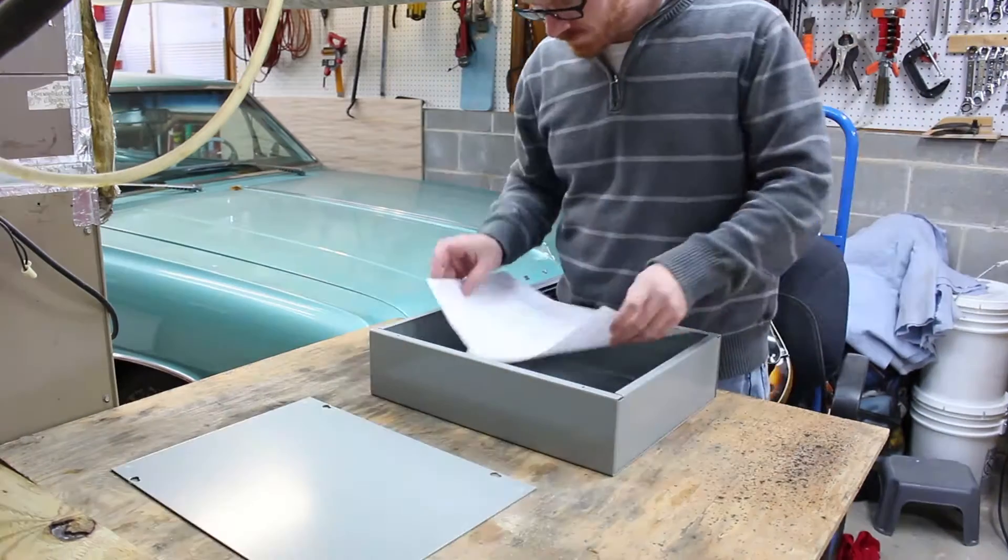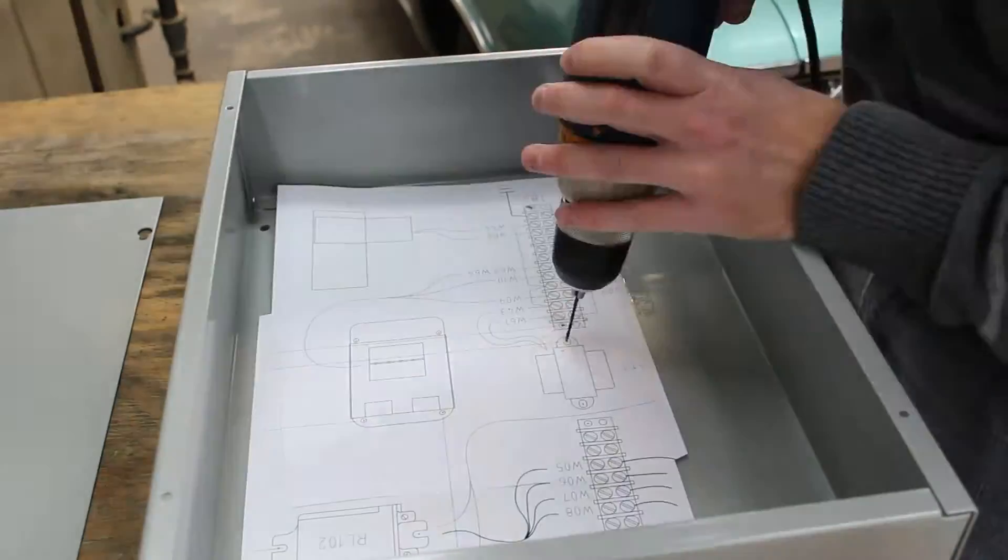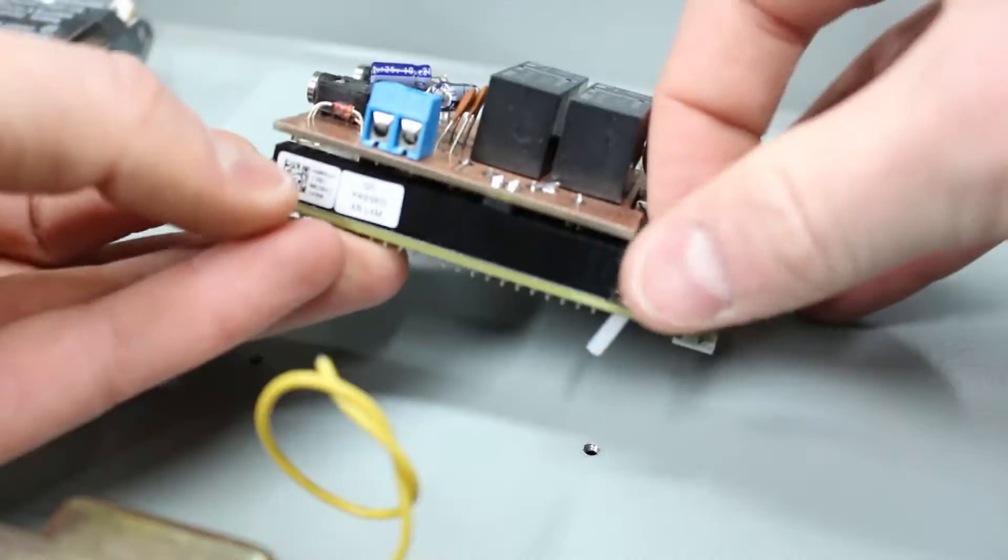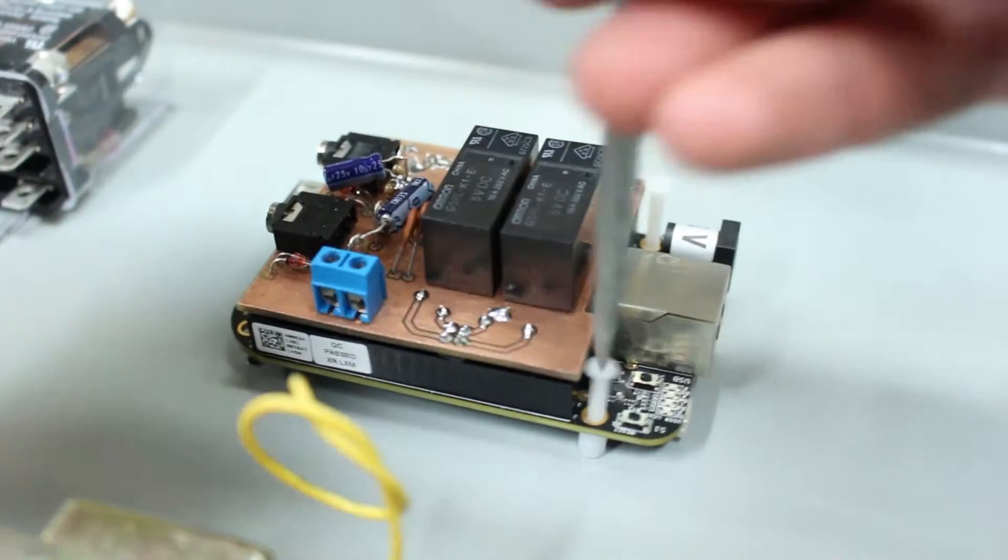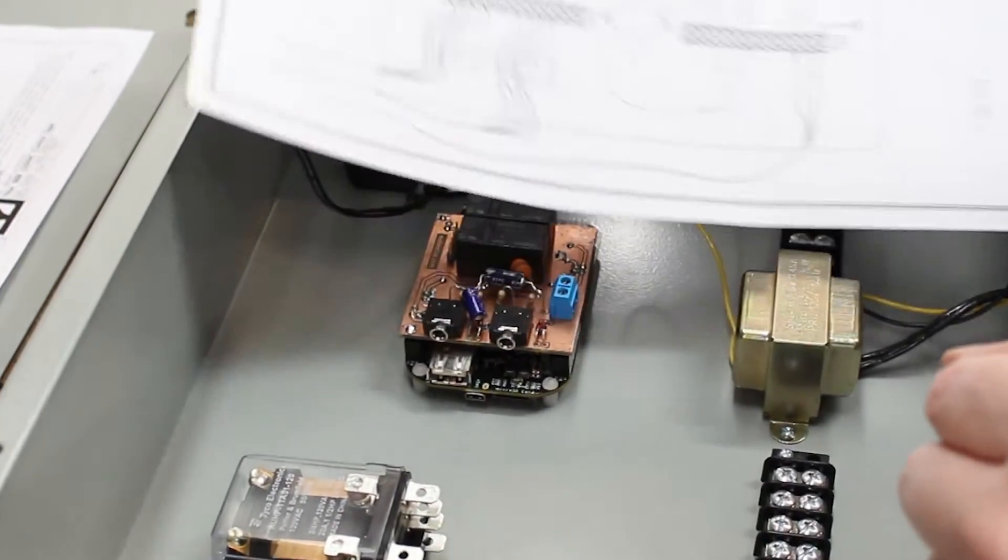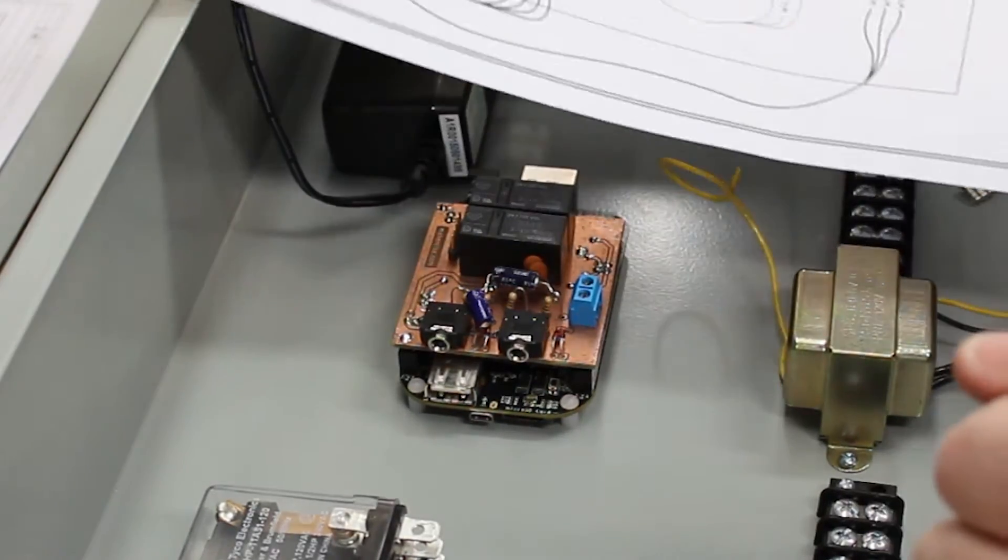I designed the panel layout using LibreCAD and the schematic and board layout using KiCAD. The brain of the system is a BeagleBone Black with a custom expansion board. Before I wire it up, I want to go into a little detail about the custom expansion board.